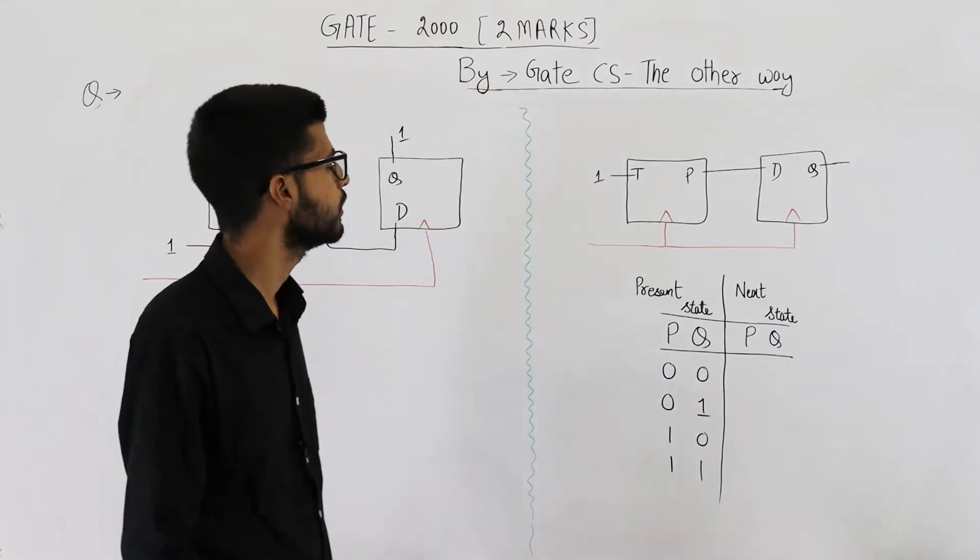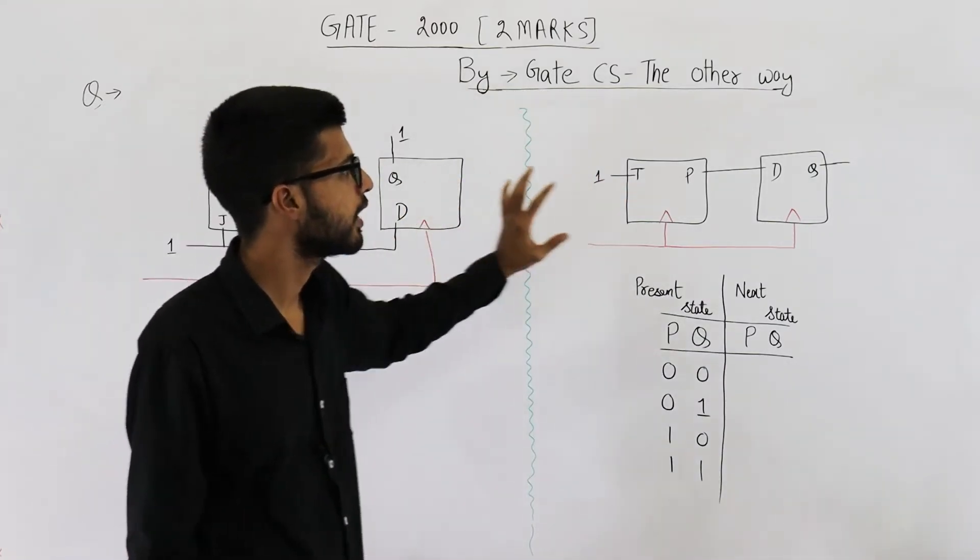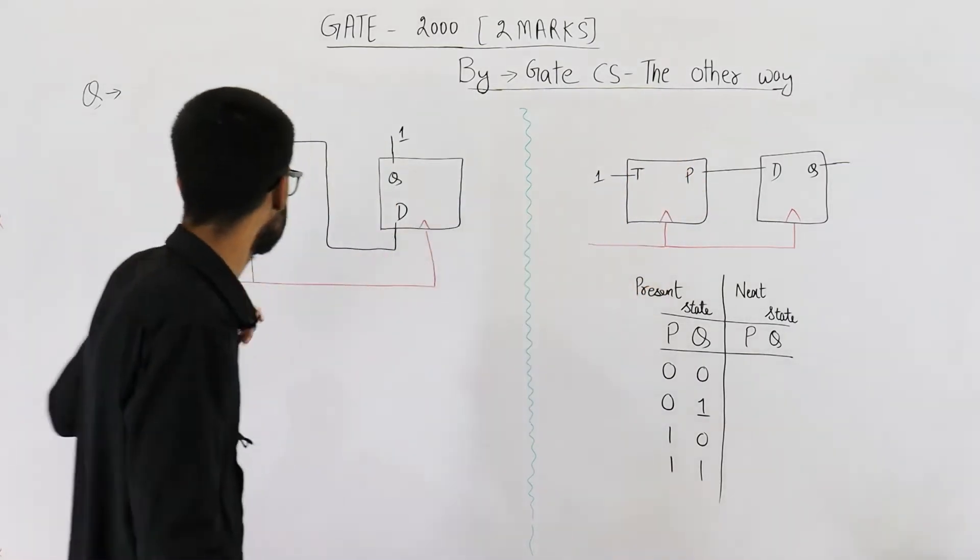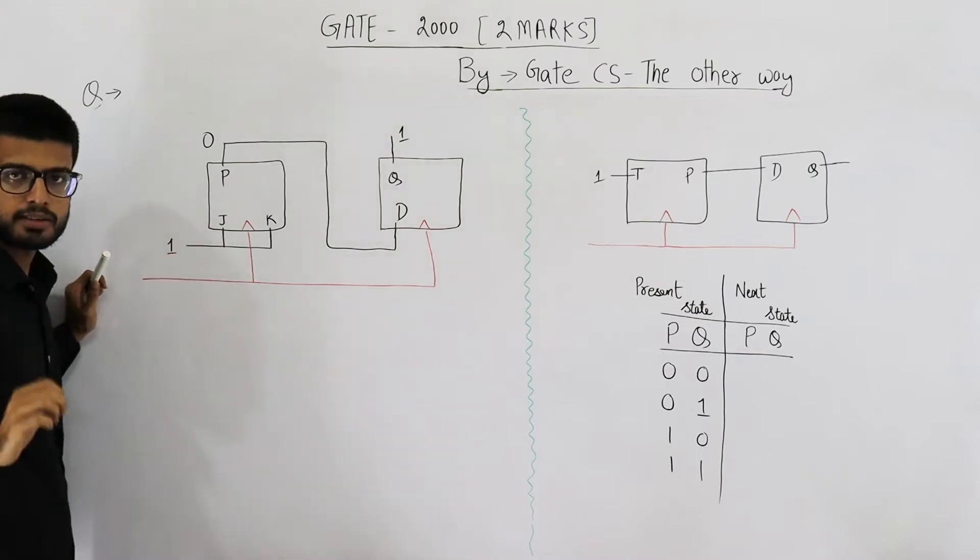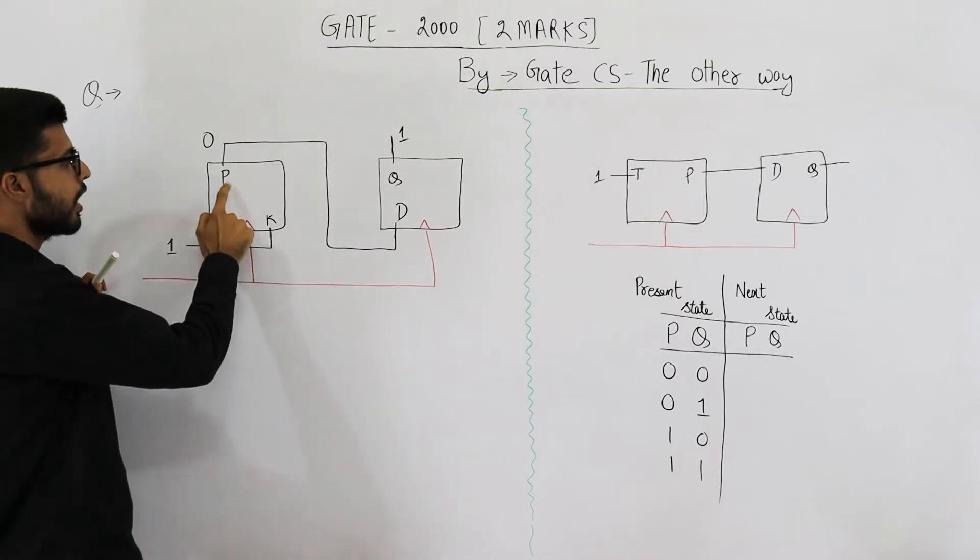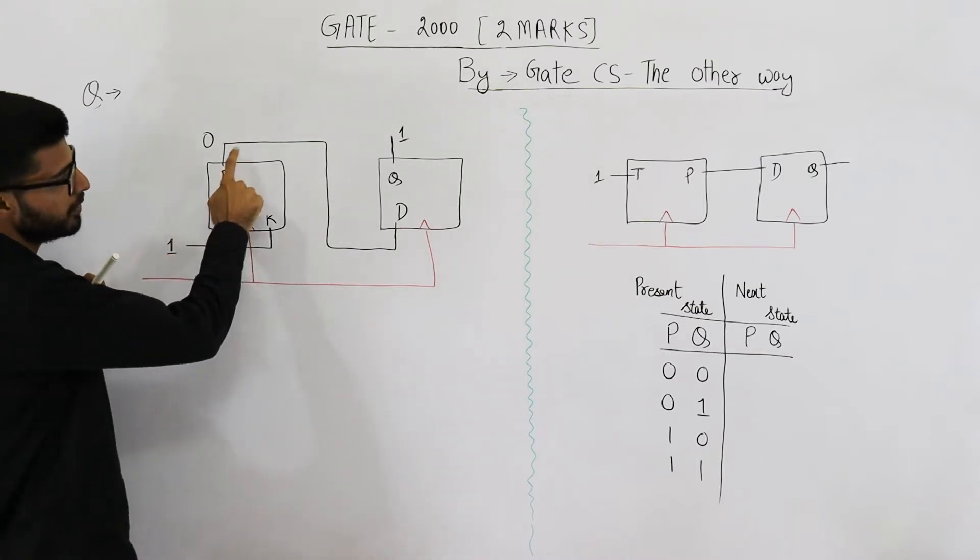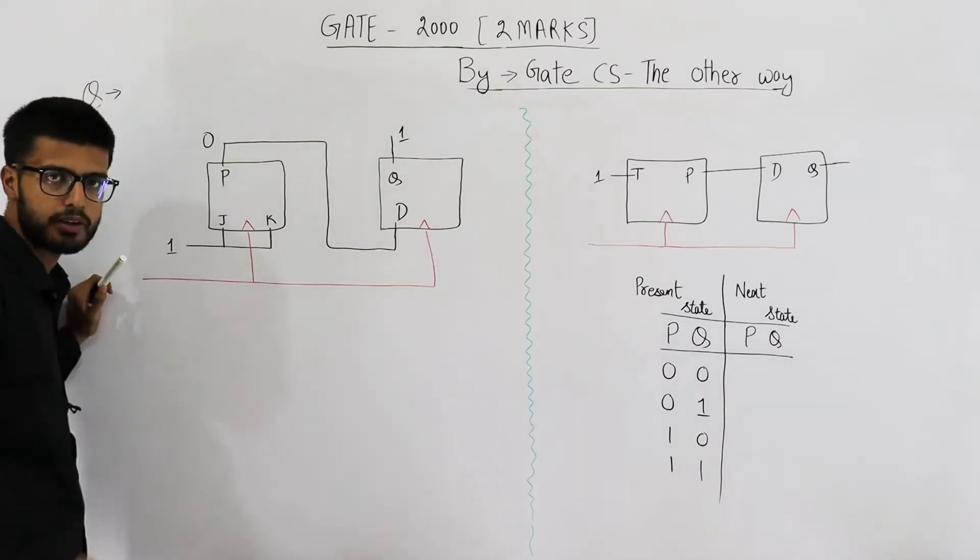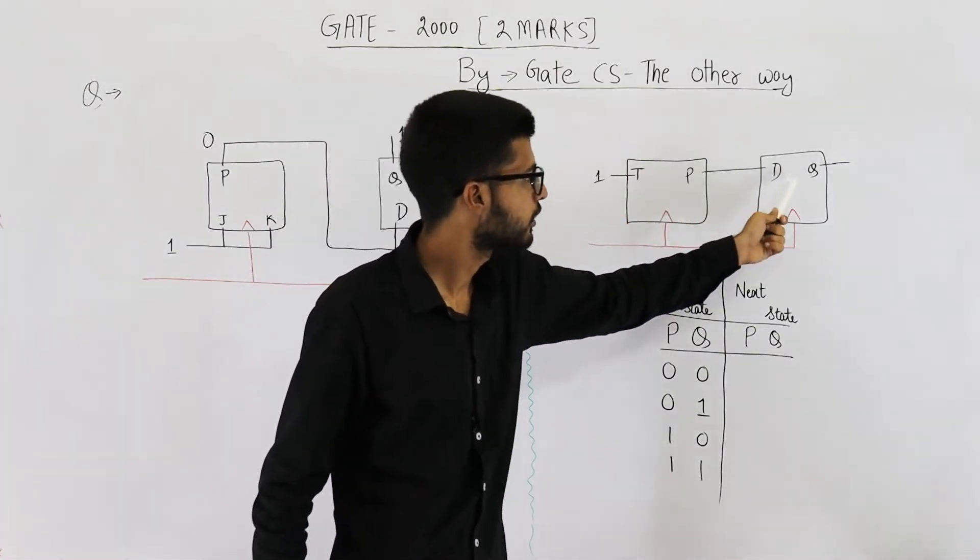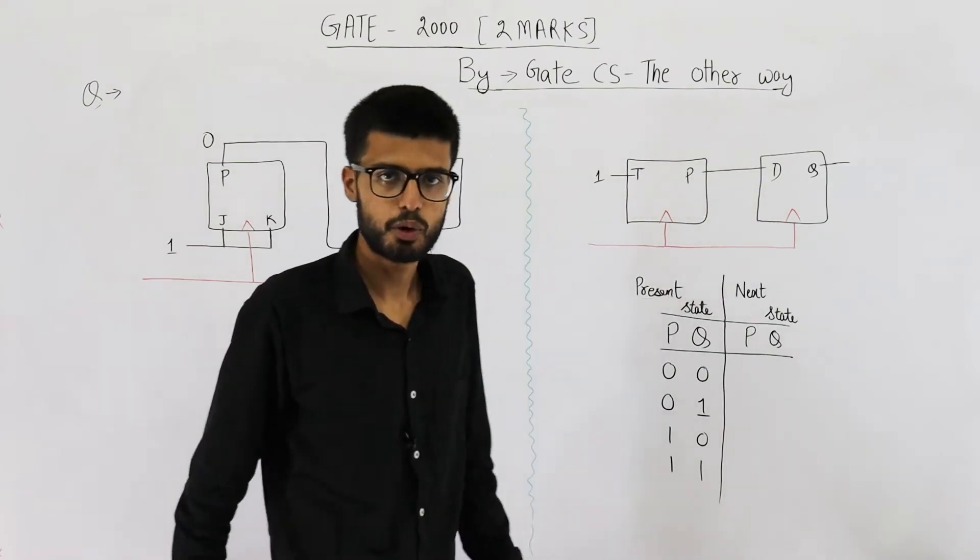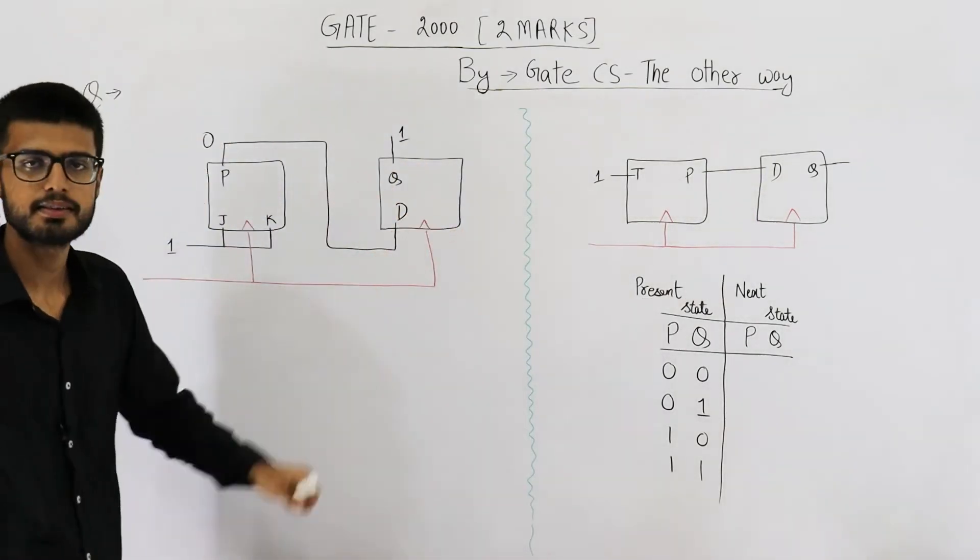This diagram is given in question. I have simplified the given diagram to this one. See J and K are connected to each other. That means it's a T flip-flop. This output P of T flip-flop is connected to input D of a D flip-flop. So the output P of a T flip-flop is connected to input D of next flip-flop. So this is the exact same diagram.